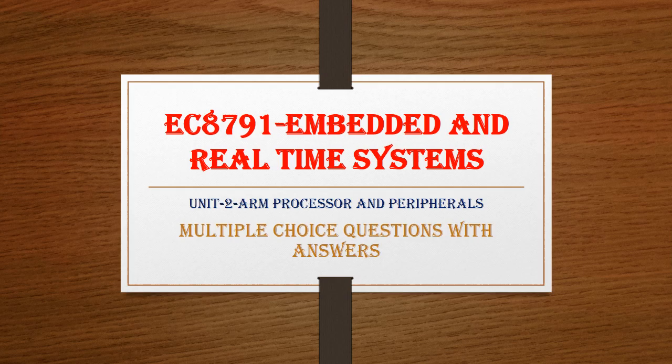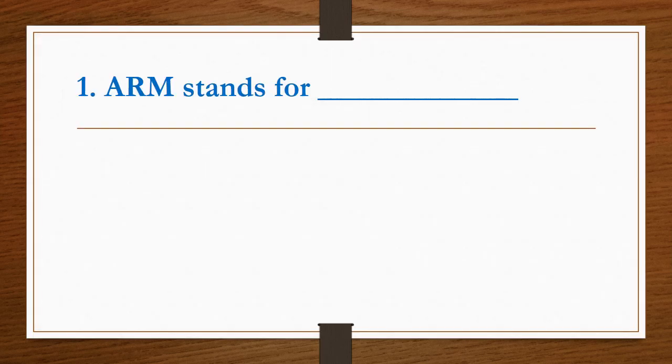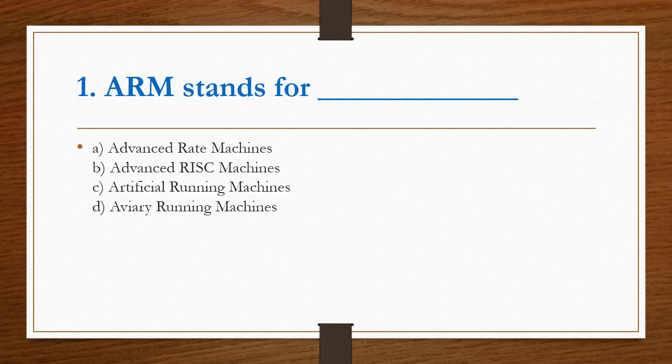In this video, we are going to see some important multiple choice questions from Unit 2 in Embedded and Real-Time Systems. First question: ARM stands for Option A, Advanced Rate Machine, Advanced Risk Machine, Artificial Running Machines, Aviary Running Machines. ARM stands for Advanced Risk Machine. Option B is the right answer.